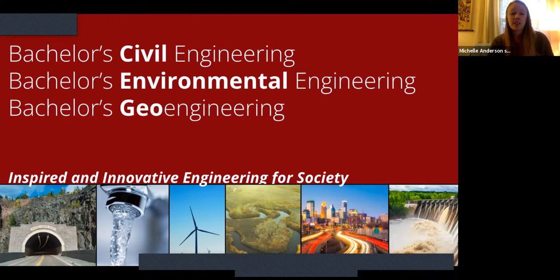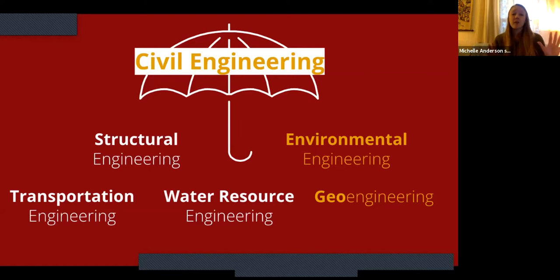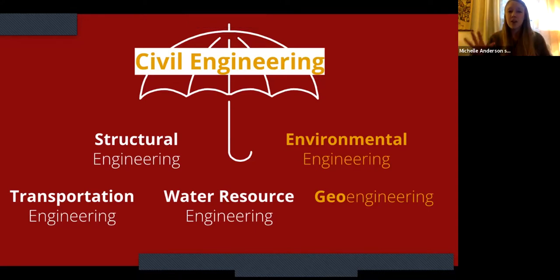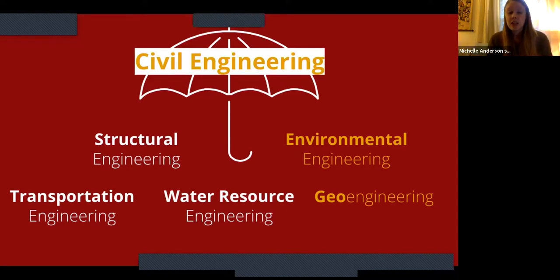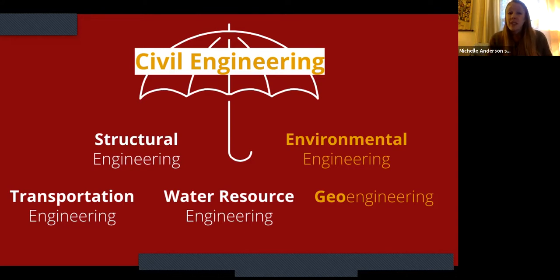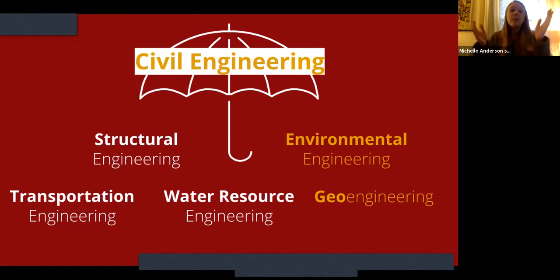So again, starting base level, we've got three majors in the department. I want to talk about how those are organized. Civil engineering is like an umbrella term for all these different types of engineering — transportation engineering, geoengineering, water resources, and more. If you study civil engineering, you'll be taking classes in all five of these more specialized areas, but you can also emphasize in water resource engineering, for example. But if you're a student who knows you're really interested in environmental or geoengineering, you can major in those more specific types. If you're studying environmental engineering, you wouldn't necessarily need to take a transportation engineering class.